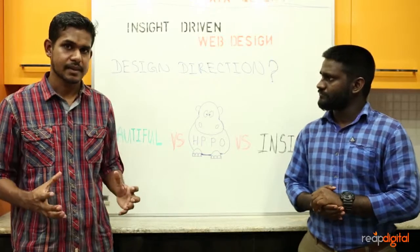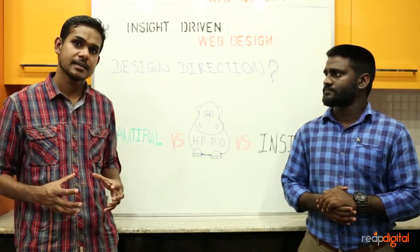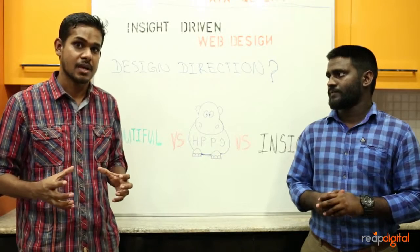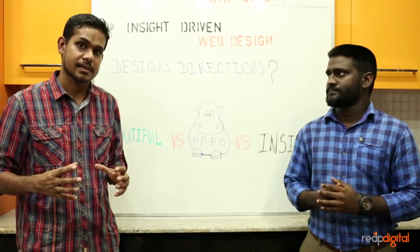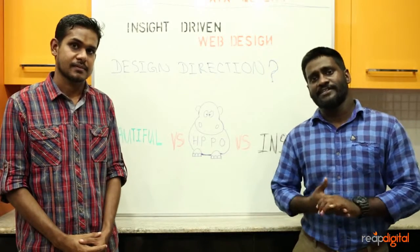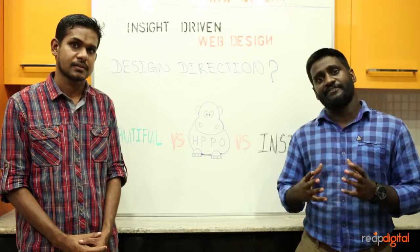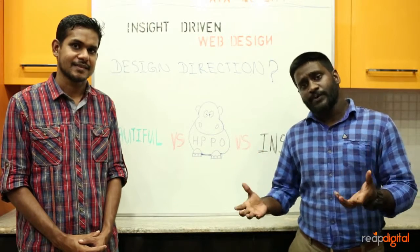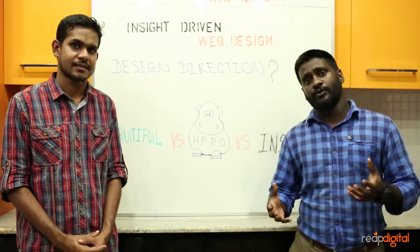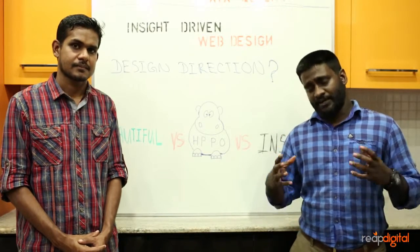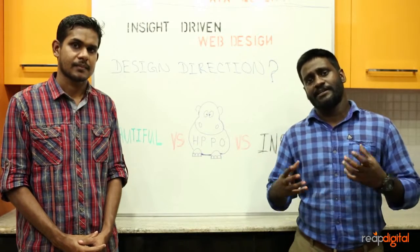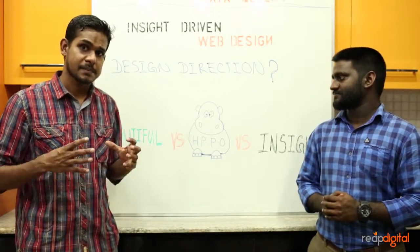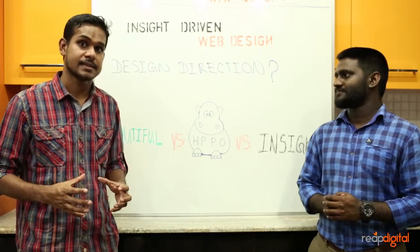Let's look at the common design directions people normally take. The first is building a beautiful website — agencies typically collect quick comments from the customer and come up with the most beautiful website possible to impress the client and close the deal. We've also seen many businesses rely on the HiPPO — the Highest Paid Person's Opinion — someone whose opinion on how the website should look and feel isn't backed by any research. You can build a website based on that opinion, but it won't provide expected results.